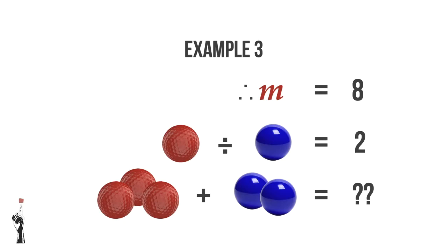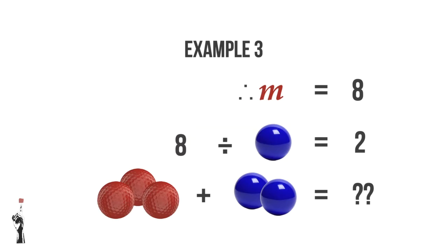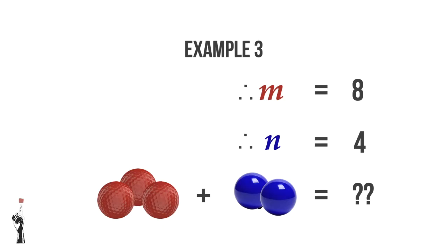In the second line, we can replace the red ball with 8. So we have 8 divided by the blue ball is equal to 2. We need the value of the blue ball, so let's replace it with a different variable. 8 divided by a variable gives us 2. What number must we divide 8 by to get 2? That's correct — 4. So N is equal to 4.